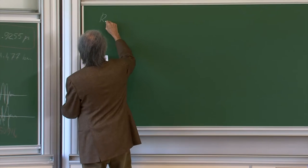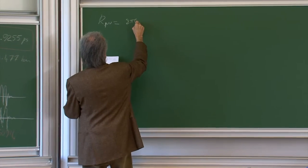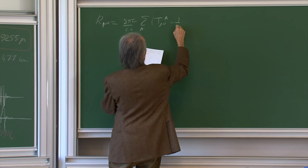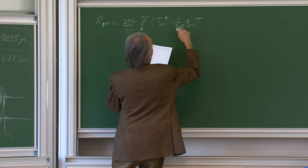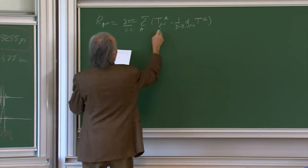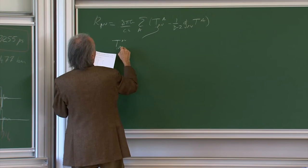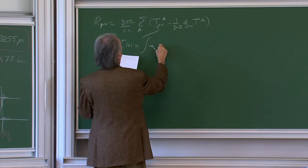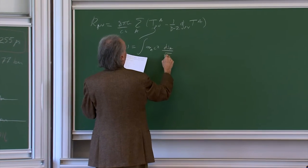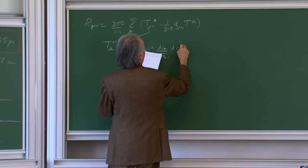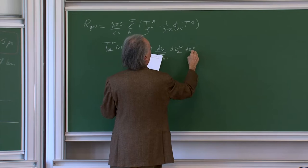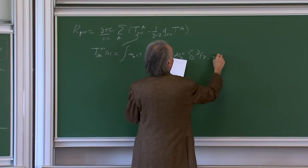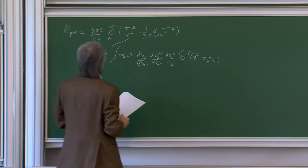The stress-energy tensor of a point mass is an integral m_a c^2 times proper time along the world lines, times dz^mu dz^mu, times the delta function of x minus z. But now we have a problem because you have delta functions. It is also convenient, though there are problems, to use harmonic coordinates in a general sense — defined by the condition that the Christoffel symbols contracted over indices is zero, which is equivalent to saying the Gothic metric's divergence is zero. Einstein already used this condition in 1912.